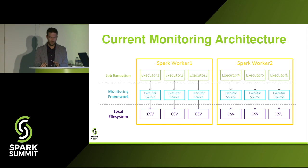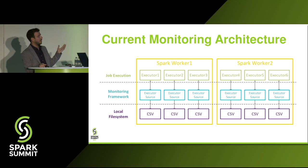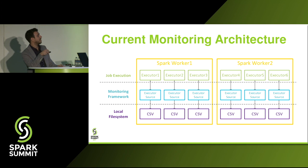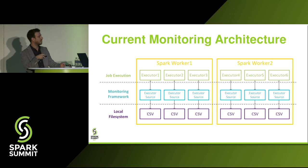Here is a brief overview of how the current monitoring architecture of Spark looks like. Say you have two Spark workers with three executors. On each executor, one executor source is attached as part of the monitoring framework, and every executor source produces one CSV file, dumping metrics into the local file system. So for every node in your cluster and every executor running inside it, there would be one CSV file per executor.